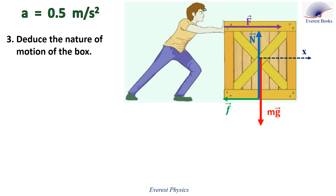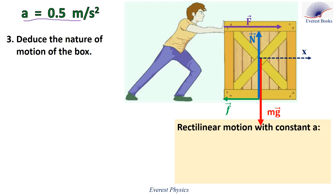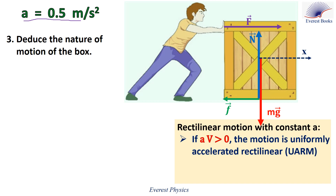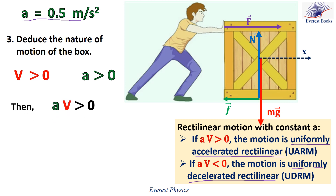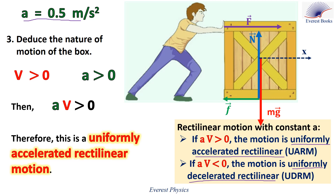Number three: deduce the nature of motion of the box. We proved that the acceleration of the box is constant and equal to 0.5 meters per second squared. In rectilinear motion with constant acceleration, if A times V is greater than zero, the motion is uniformly accelerated rectilinear; and if A times V is less than zero, the motion is uniformly decelerated rectilinear. In our example, V is greater than zero since the box moves along the positive x direction, and A is also positive. Then A times V is greater than zero. Therefore, the motion is uniformly accelerated rectilinear.